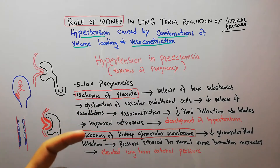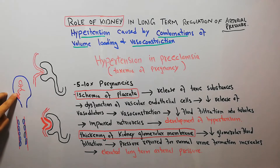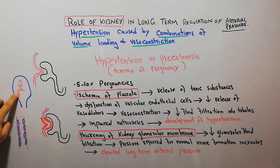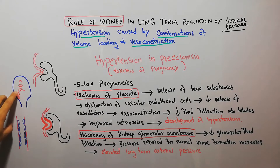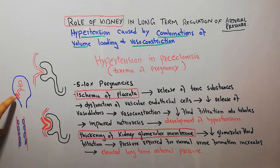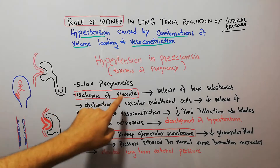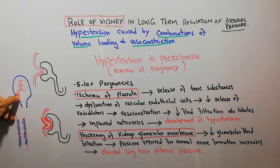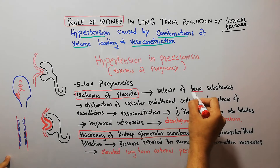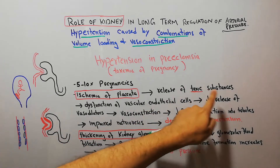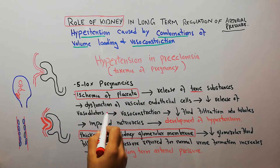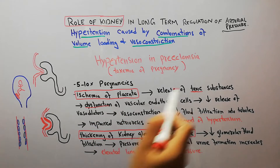In preeclampsia there is ischemia of the placenta. The placenta is a tissue inside the uterus of the mother that takes nutrients from the mother and provides them to the baby. When the blood supply to this placenta is decreased — known as ischemia of the placenta — there is a release of some toxic substances from the placenta.